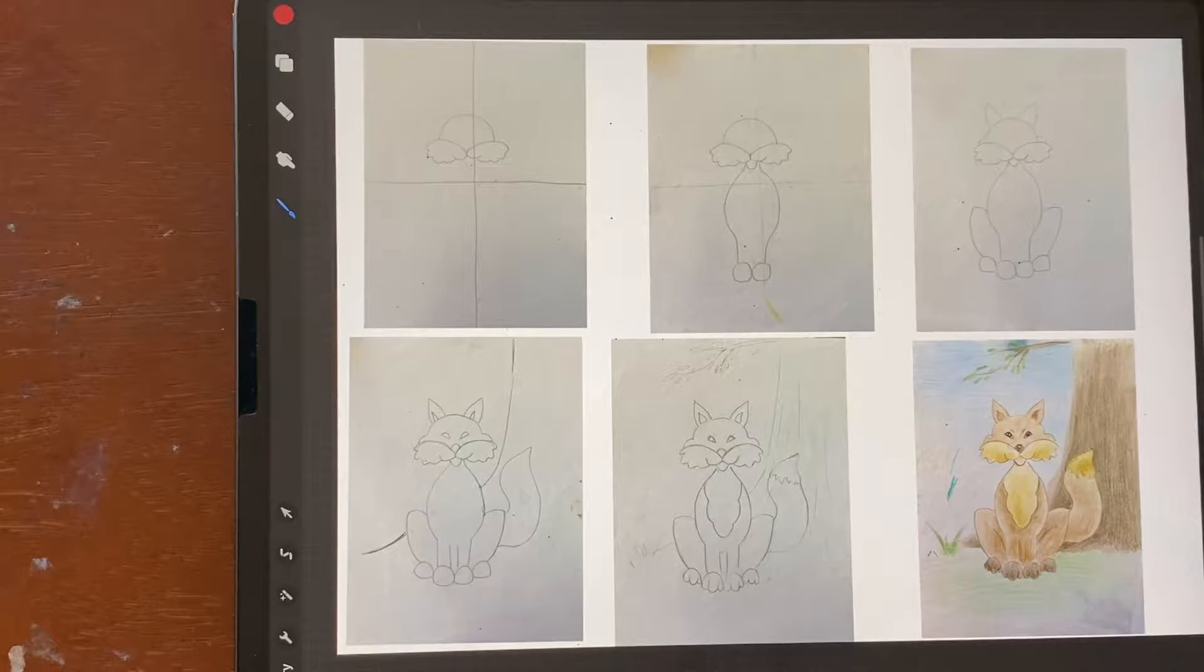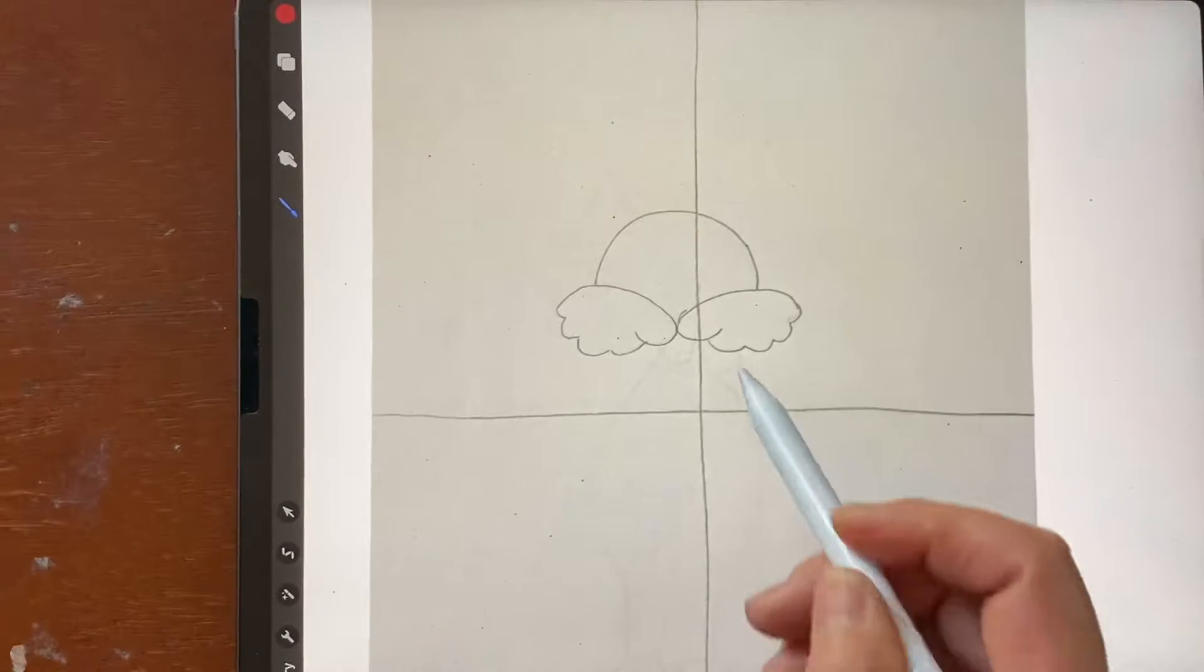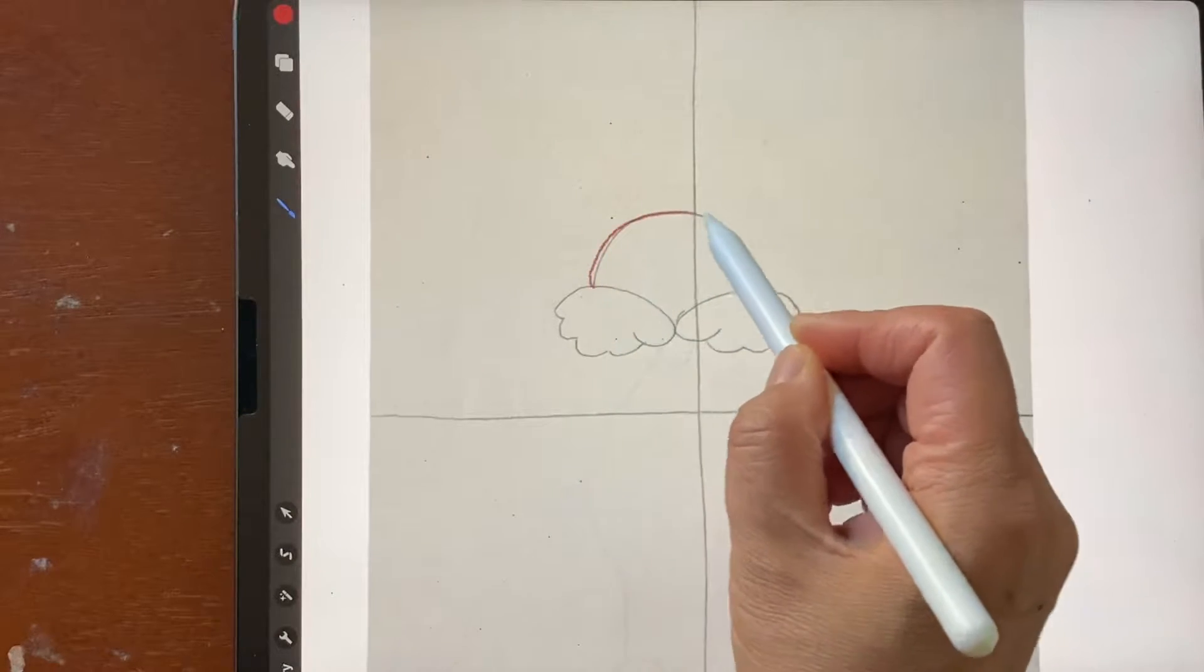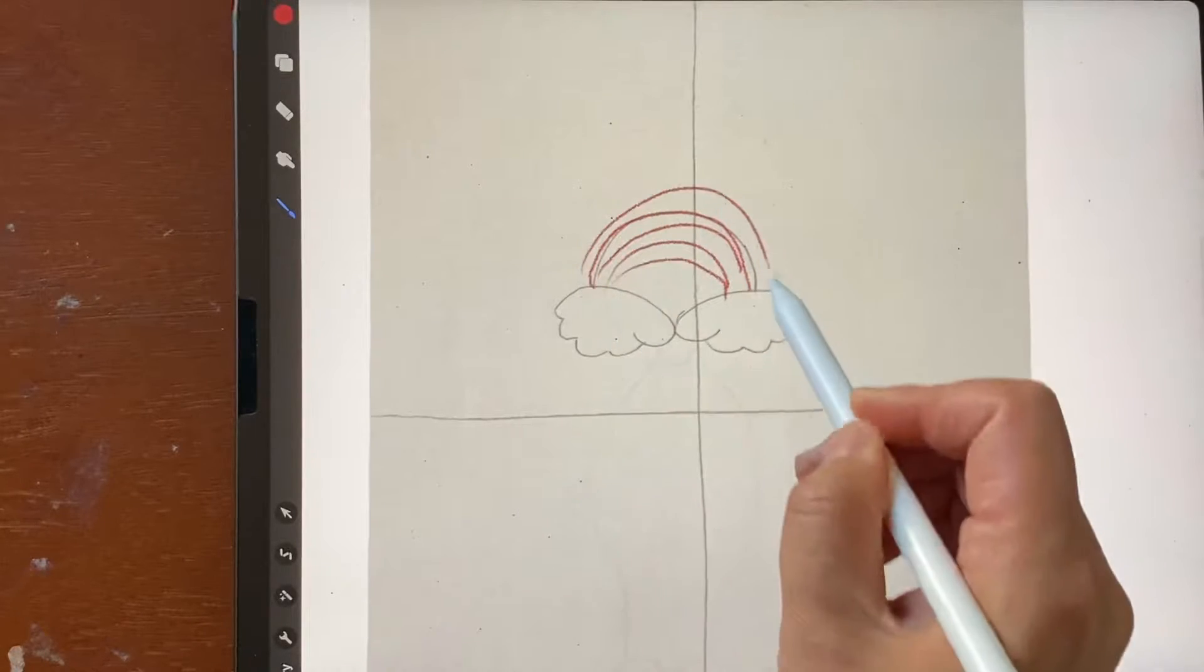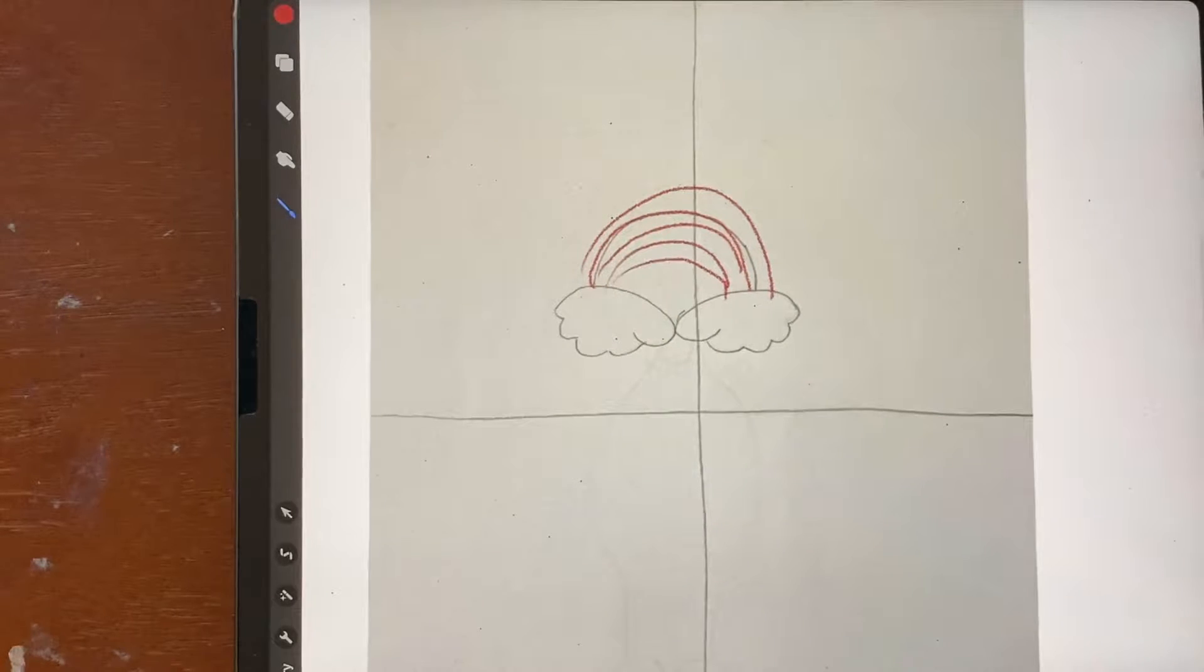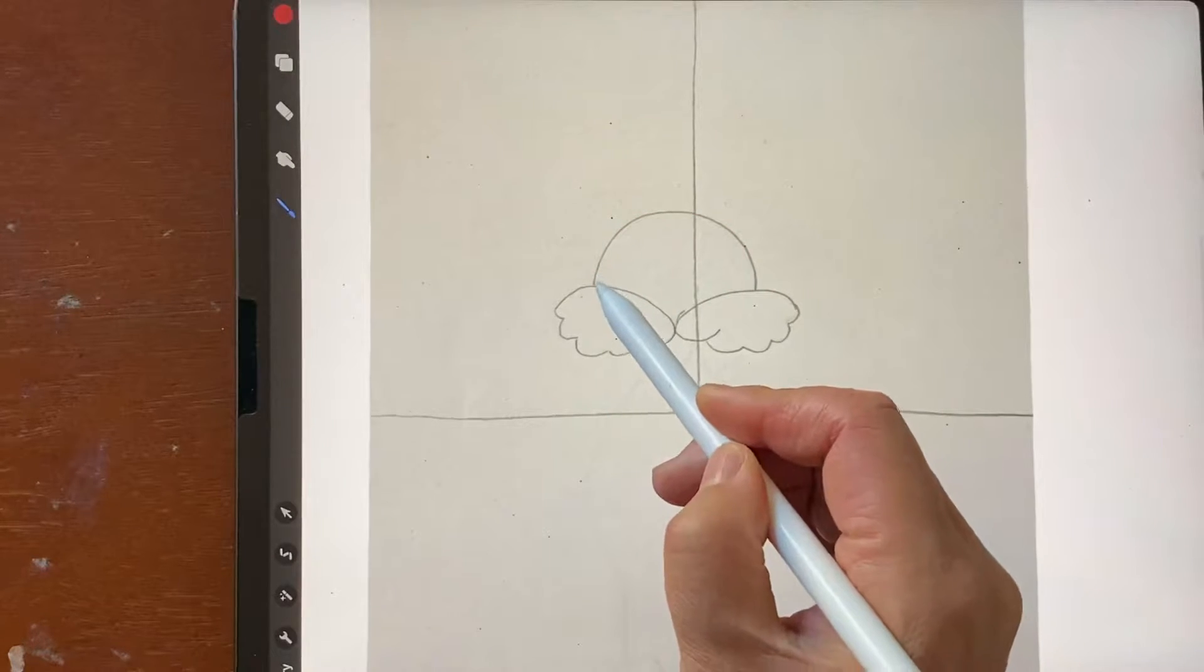So here's the first step: you draw like a rainbow with two clouds. I see other kids drawing rainbow with two clouds, looks like that. So you do the first, you do this one.